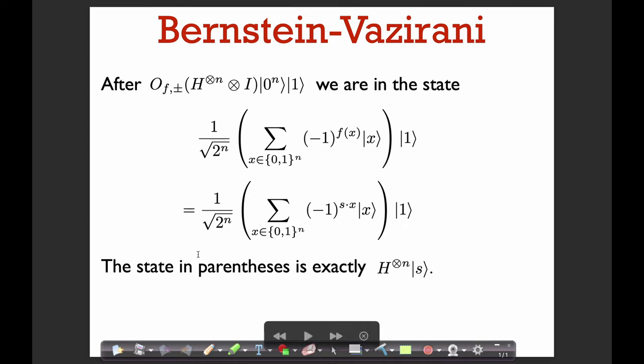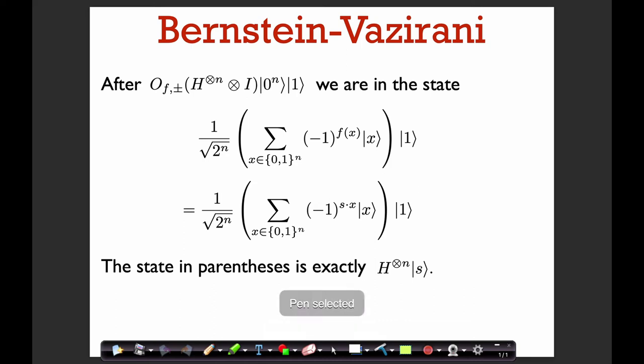After we do a Hadamard and then the phase oracle — the Hadamard on the first register creates a uniform superposition over all n-bit strings, and then we apply a phase oracle — that puts us in this state: sum over all x of minus 1 to the f of x times x. Now remember what f of x is: we're promised that it's going to be s dot x for some string s. So we're in this state here for some s.